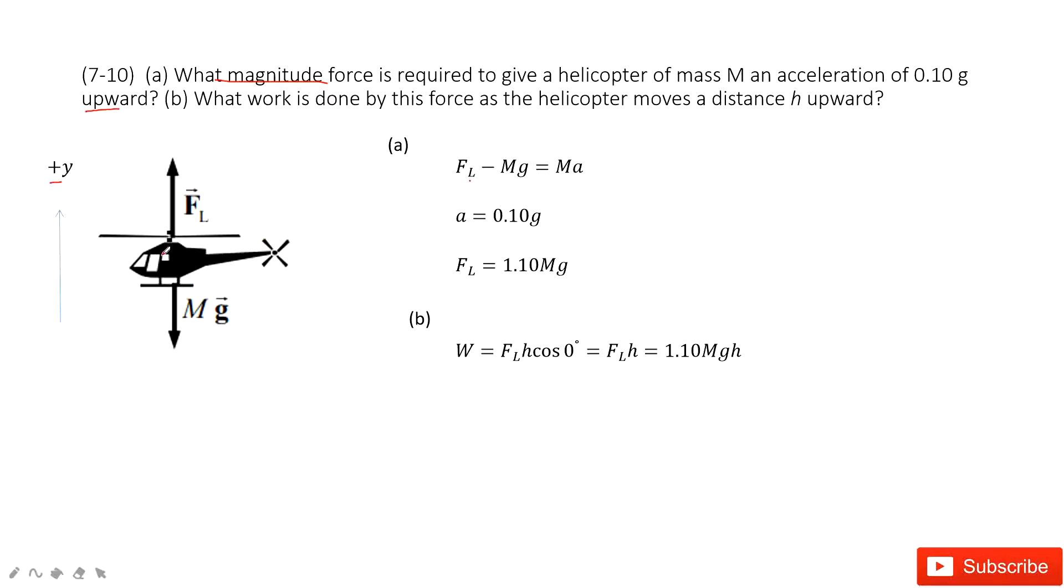and then the gravity, the force of gravity acts on this object. So then, the acceleration is 0.1g up. So in this one, from Newton's second law, we get the net force equals mass times acceleration. Therefore, this force's magnitude becomes 1.1Mg.